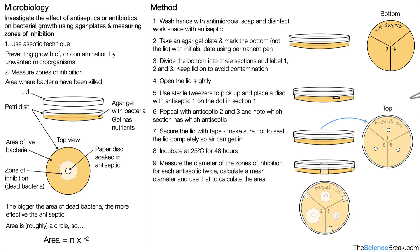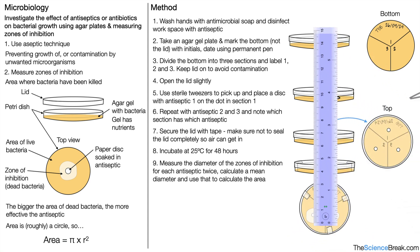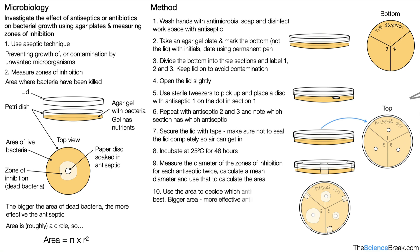We measure the diameter of the zones of inhibition for each antiseptic twice — in two different sections — and calculate a mean diameter to use to calculate the area. Using a ruler, we measure antiseptic 2 by taking one diameter reading and then another diameter reading at a different angle, and take the mean of the two diameters to get a mean radius. We use the area to decide which antiseptic is the best — remember, the bigger the area, the more effective the antiseptic is.